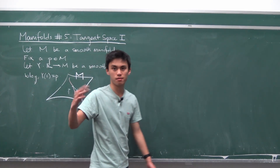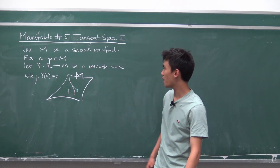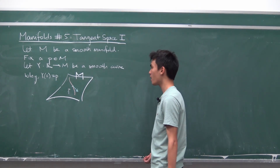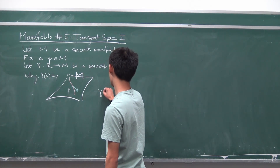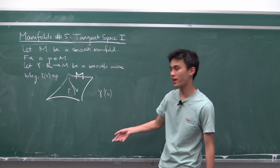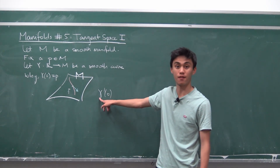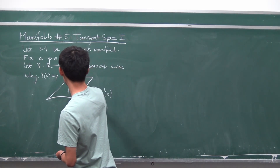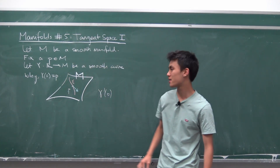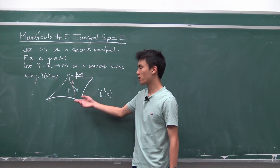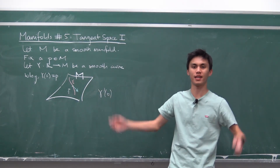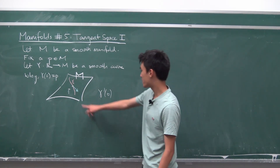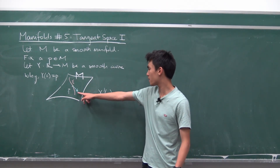If our manifold is a surface in three-dimensional space, and you have a curve running through it, you could construct a vector simply as γ'(0). But from last video, we know that this doesn't even make sense — you cannot differentiate a curve on the manifold because you can't take difference quotients there. So that's a problem: we can't differentiate a curve on the manifold to get a tangent vector as we usually would in multivariable calculus.